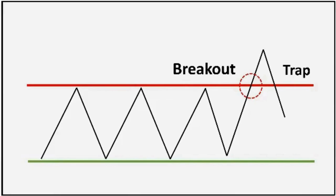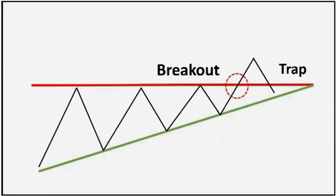This type of trap doesn't only occur in a sideways range — it can also occur in a pattern. As you see on the screen, this is an ascending triangle pattern. When the breakout is given, buyers with a bullish view enter, and those buyers end up making a loss despite their proper technical analysis and accurate prediction about the market. That's how a bull trap works.